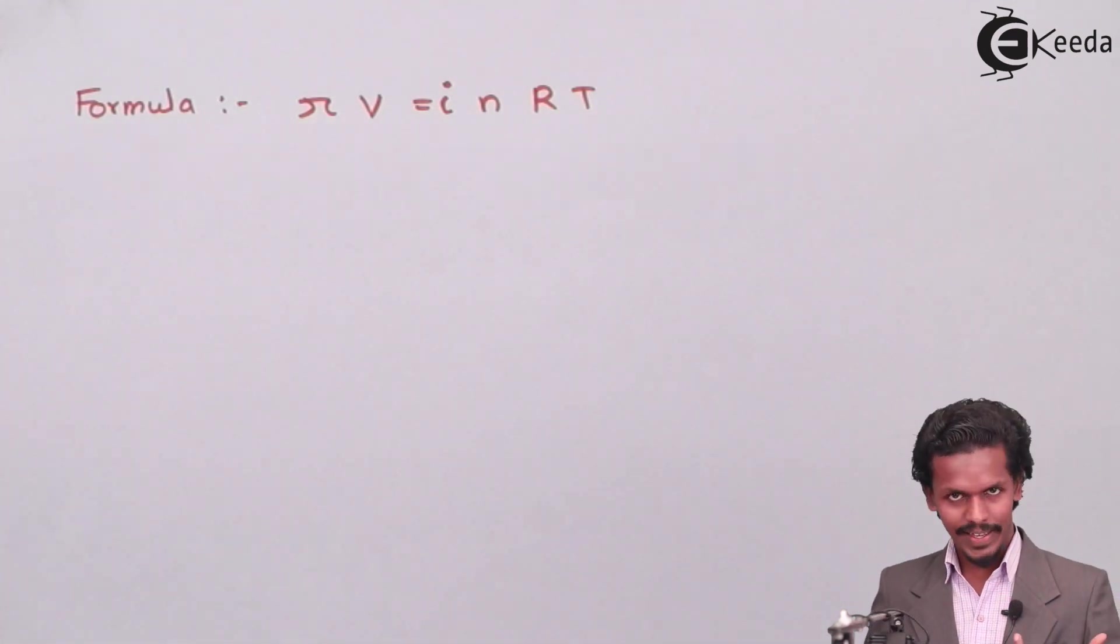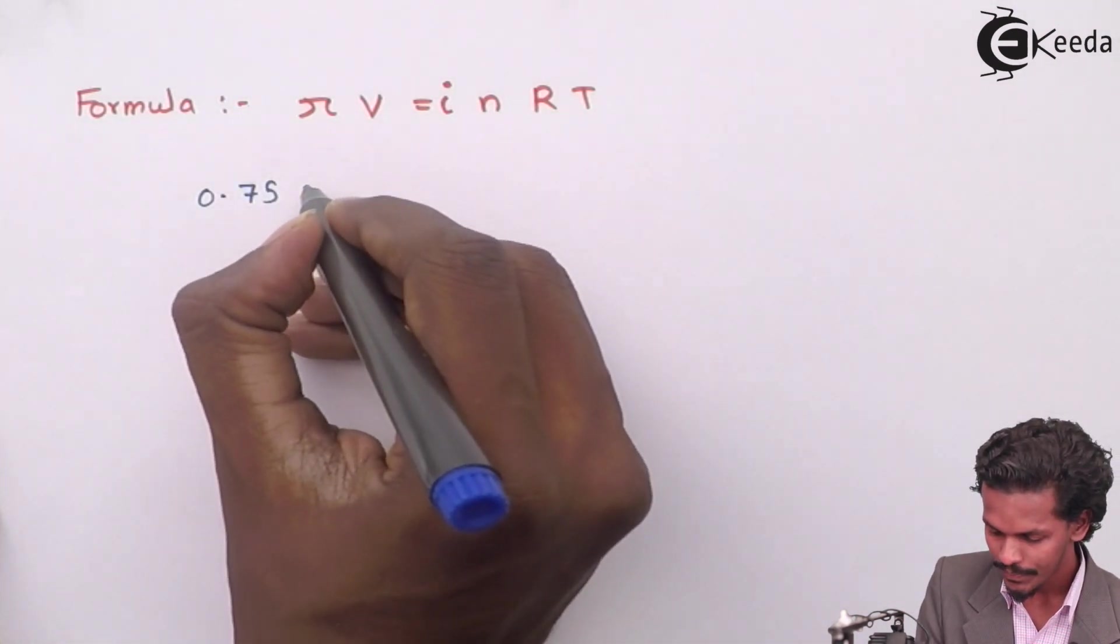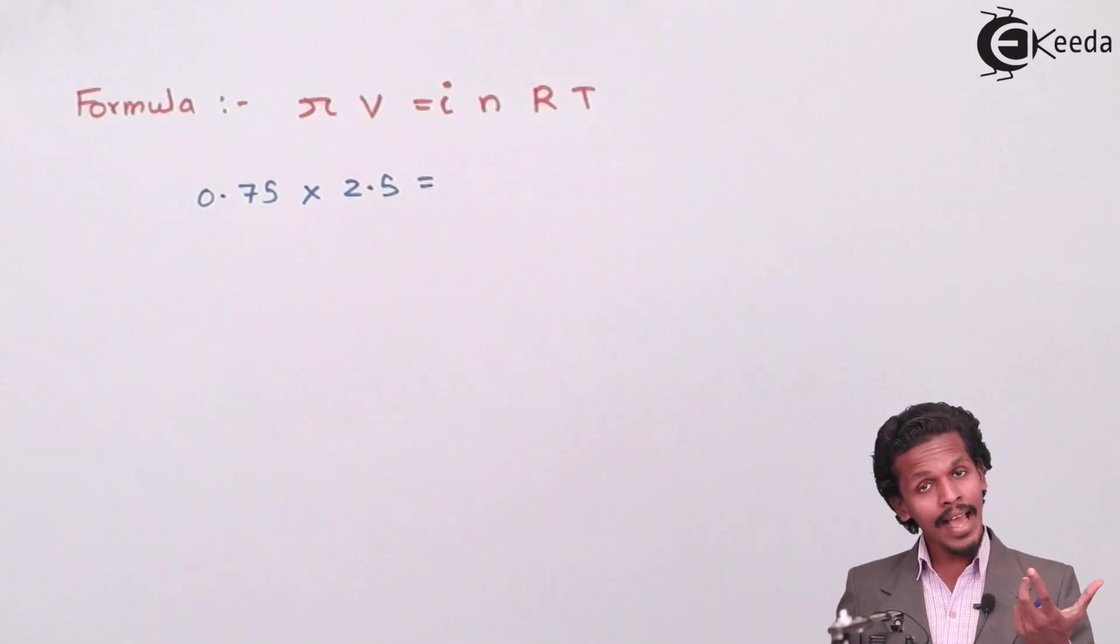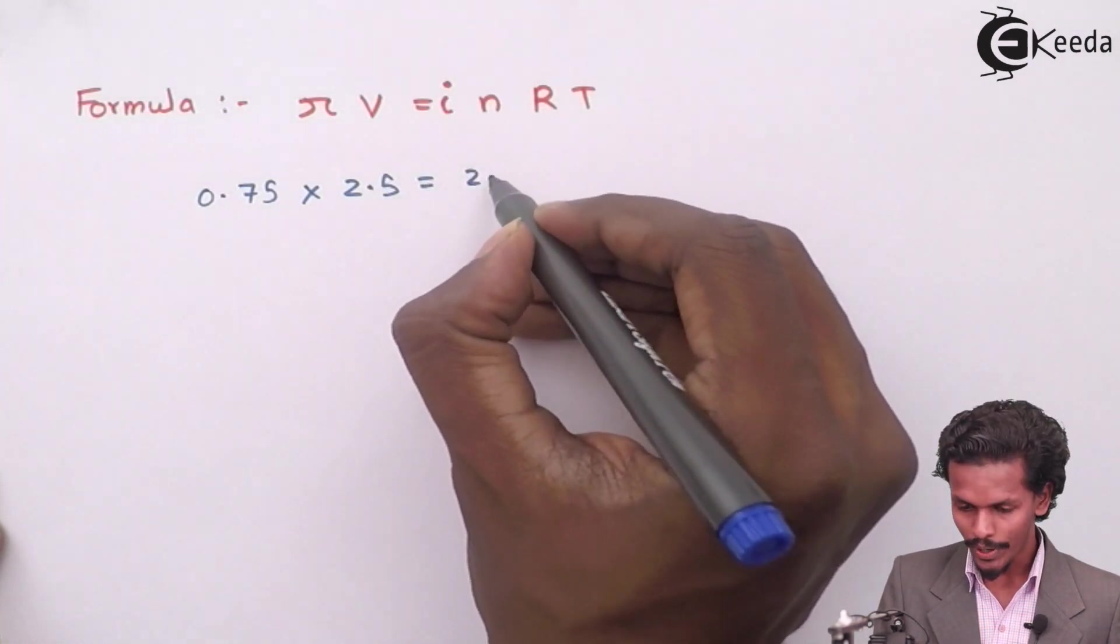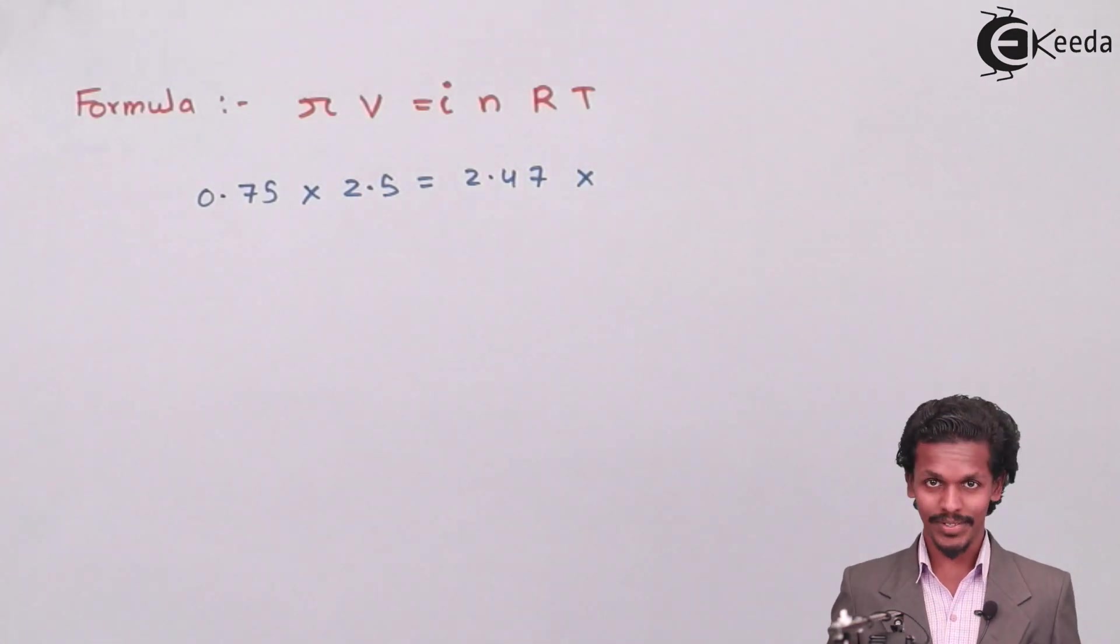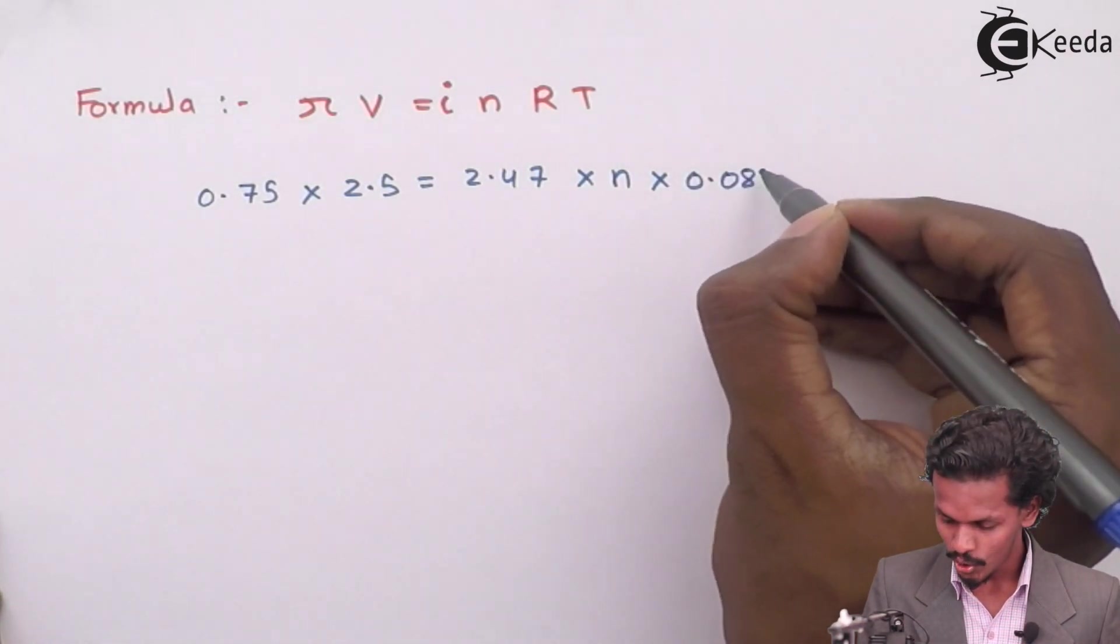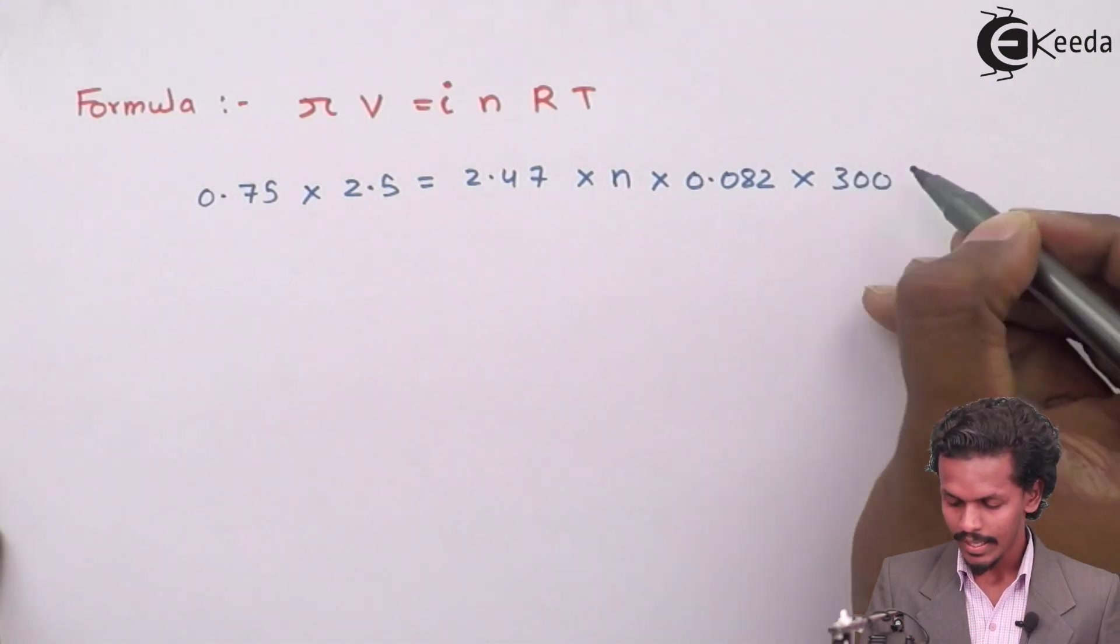So in this case since the π is given as 0.75, the volume is given as 2.5 liter. Even the i is also given that is 2.47. The number of moles of solute is not known to us, so we will keep as it is n. Now we will multiply R that is 0.082 and ultimately we will multiply the temperature which is